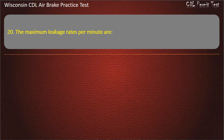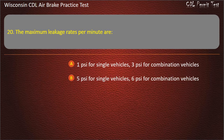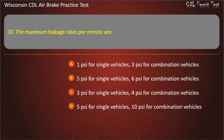Question 20. The maximum leakage rates per minute are: 1 pound per square inch for single vehicles, 3 pounds per square inch for combination vehicles. 5 pounds per square inch for single vehicles. 3 pounds per square inch for single vehicles, 4 pounds per square inch for combination vehicles.